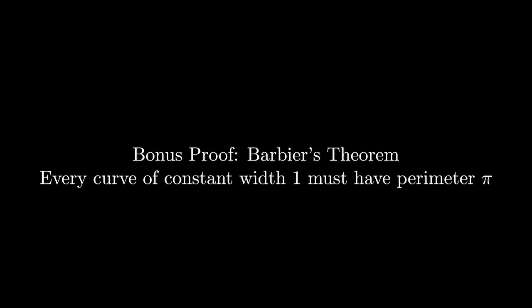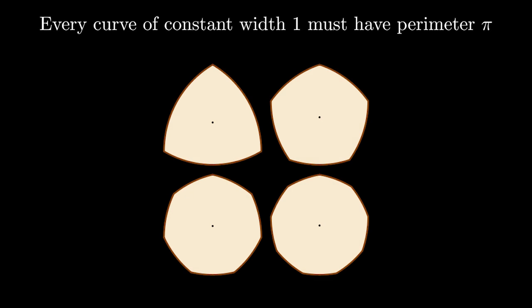As an added bonus to what we've done so far in the video, we can come up with a very clever proof of Barbier's theorem. Barbier's theorem states that every curve of constant width 1 must have a perimeter of pi. Here are some such shapes of constant width. There is no obvious way to construct all these shapes, and in general they can be quite complicated.